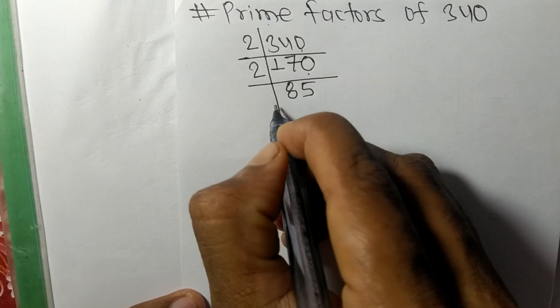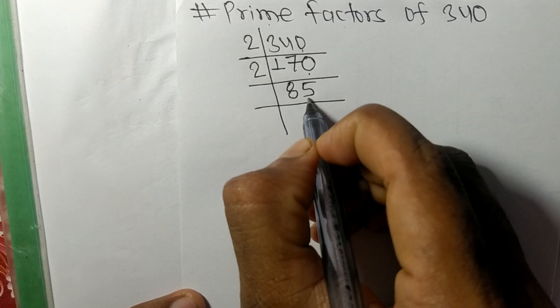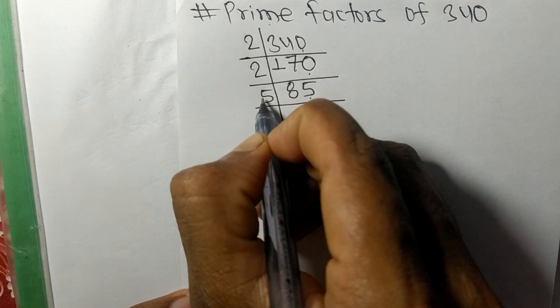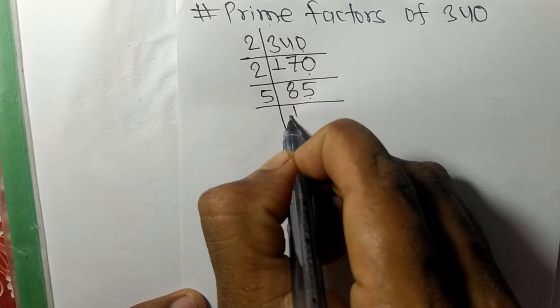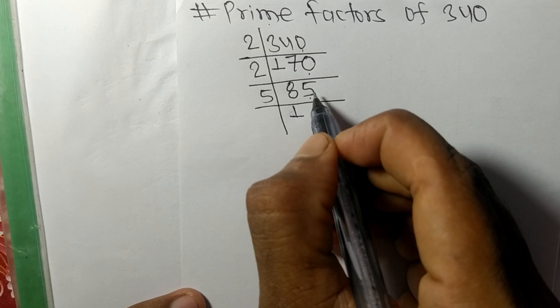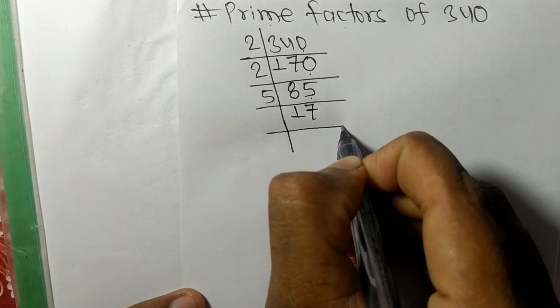Now we have 85, and it has 5 at the last, so it is divisible by 5. So 5 times 1 means 5, remainder 3. So 35, 5 times 7 means 35.